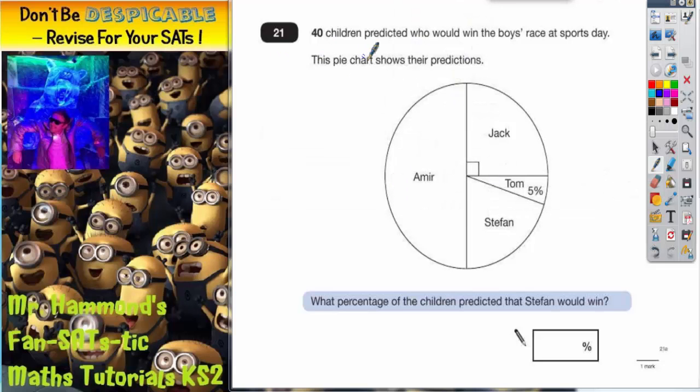Question 21. 40 children predicted who would win the boys' race at sports day. This pie chart shows their predictions. There were only 4 boys in the race: Amir, Jack, Tom and Stefan.